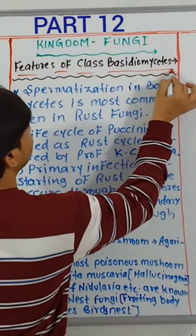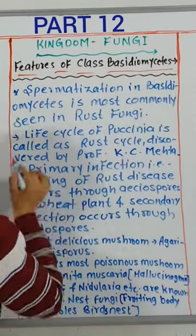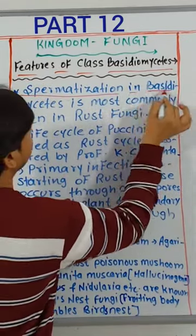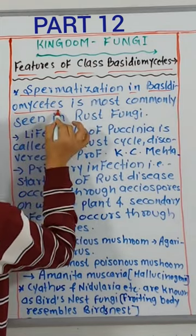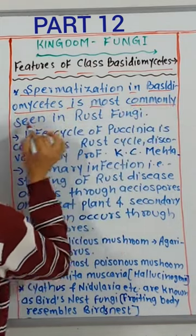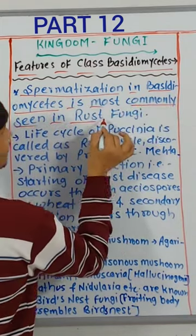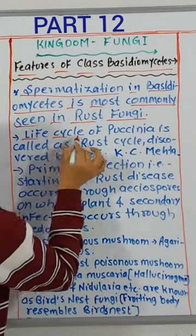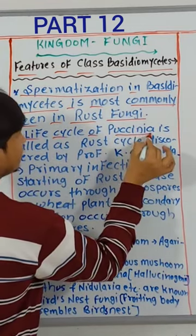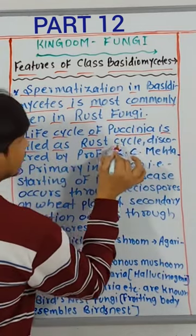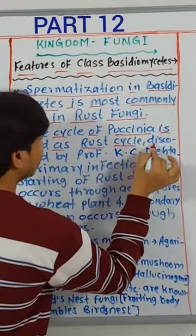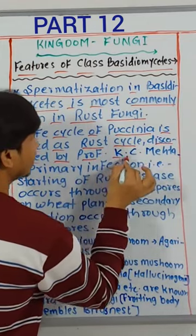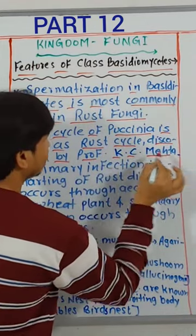Features of Class Basidiomycetes. Spermatization in Basidiomycetes is most commonly seen in rust fungi. The life cycle of Puccinia is called the rust cycle, discovered by Professor K.C. Mehta.